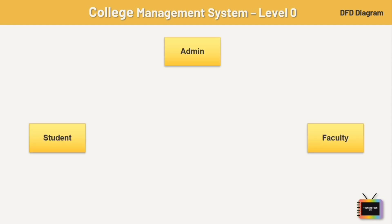External entities include student, faculty, admin, etc. Here, student represents the students enrolled in the college, faculty represents the teaching staff of the college, and admin represents the administrative staff responsible for managing the college. Now let's see the relationship between process and entity.